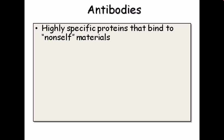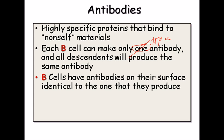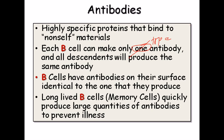Antibodies are highly specific proteins that bind to non-self materials — the foreign particles called antigens. Each B cell can make only one type of antibody, and all its descendants produce the same antibody. B cells display a sample of the antibody they produce on their surface, which allows T cells to recognize what type of antibody is being produced and regulate its concentration accordingly.